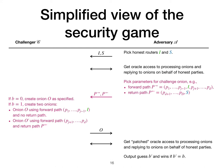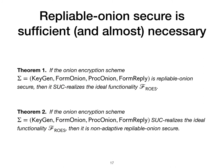An onion encryption scheme is repliable onion secure if every efficient adversary wins this game only with negligible advantage. In the paper, we prove that if the onion encryption scheme sigma is repliable onion secure, then sigma SUC-realizes the ideal functionality F-Rows. This shows that the game-based definition is sufficient. We also prove that if sigma SUC-realizes F-Rows, then it is non-adaptively repliable onion secure. This shows that the game-based definition is almost necessary as well.